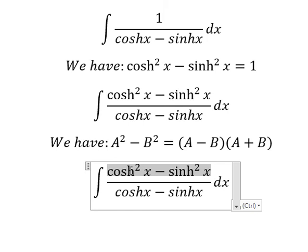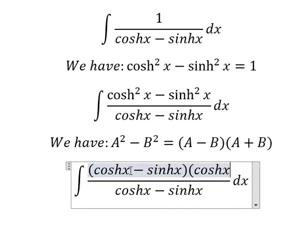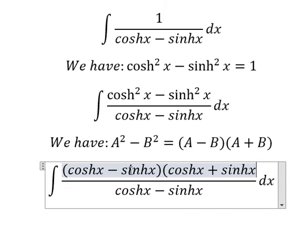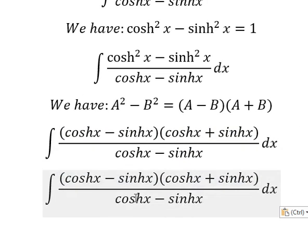So this one, we have cosh x minus sinh x, and we have cosh x plus sinh x. Now we need to simplify.